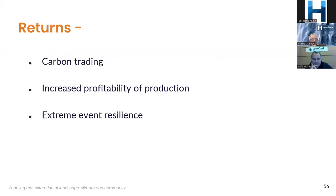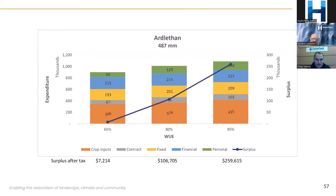Briefly looking at returns: returns obviously come from carbon trading, but also from increased profitability, production and extreme event resilience. Here's a farm we've been monitoring for 15 years in the 500 mm rainfall zone, which is just at the very edge of margin for cropping. At the start, with 65% water utilisation efficiency and low carbon, the farmer achieved on an average year only a surplus of $7,000 after the family taking an income of $80,000. By the end of the 15th year, the farmer had gone up to a surplus after tax of $260,000, with the family taking out $146,000, and water use efficiency close to maximum at 95%. That's what carbon does.